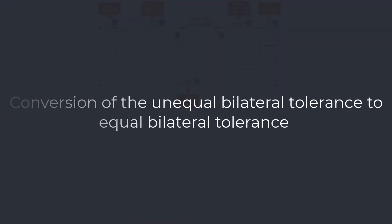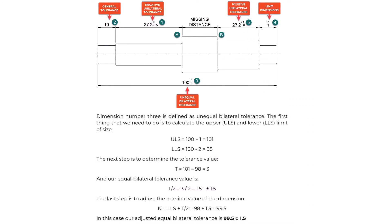Conversion of Unequal Bilateral Tolerance to Equal Bilateral Tolerance. Dimension number three is defined as an unequal bilateral tolerance. ULS = 100 + 1 = 101. LLS = 100 − 2 = 98. Tolerance value T = 101 − 98 = 3, so the equal bilateral tolerance is T/2 = 3/2 = ±1.5. The adjusted nominal value N = LLS + T/2 = 98 + 1.5 = 99.5. Our adjusted equal bilateral tolerance is 99.5 ± 1.5 millimeters.